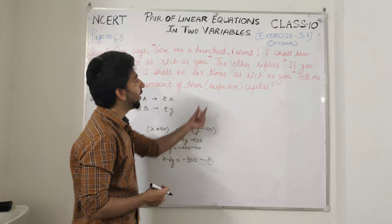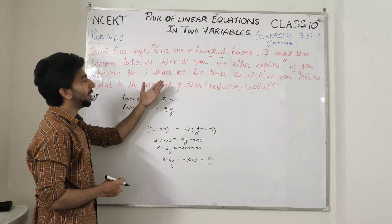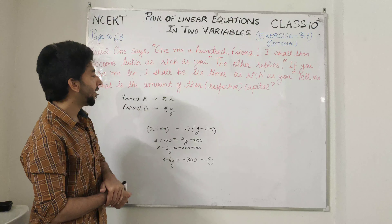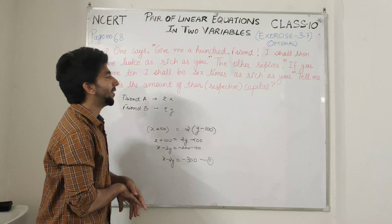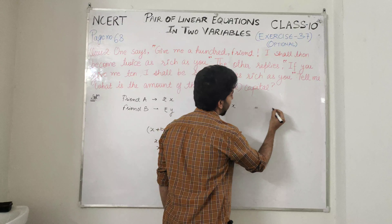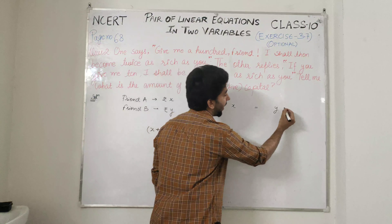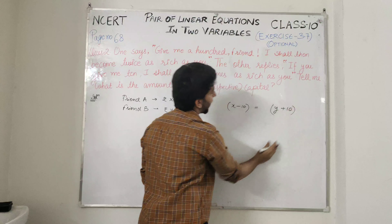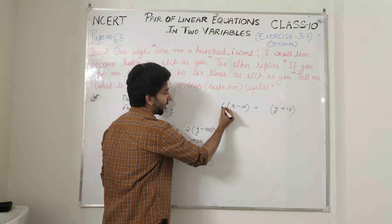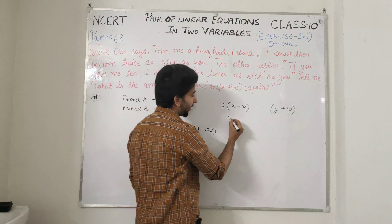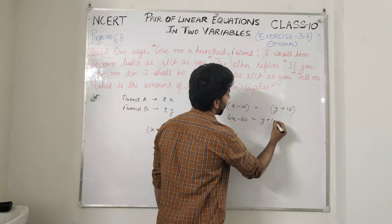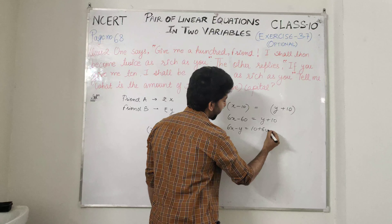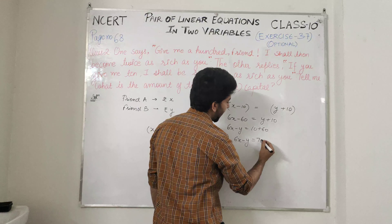Second equation: the other replies — if you give me 10, I shall be 6 times as rich as you. अगर तुम मुझे rupees 10 दे दोगे तो मैं तुम्हारी amount के 6 times हो जाऊँगा. Y में add करेंगे 10 और X में minus 10. Simplify करो: 6X minus 60 = Y plus 10, तो 6X minus Y = 70. यह है हमारी second equation.